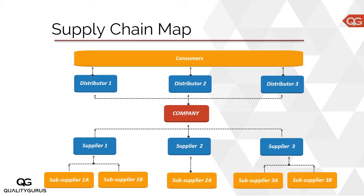For example, if you want a pump, the supplier doesn't make everything related to the pump — it has sub-suppliers as well. One sub-supplier will be making the casing of the pump, another will be making the shaft, and supplier one would be producing pumps or other components for you. So you list down all the suppliers and their sub-suppliers. In this case, supplier one has two sub-suppliers: sub-supplier 1A and 1B.